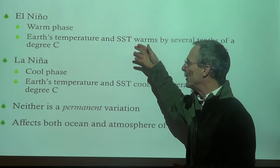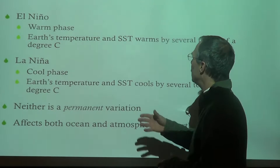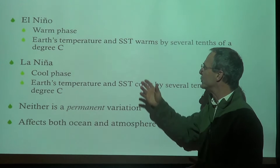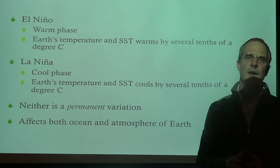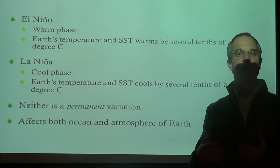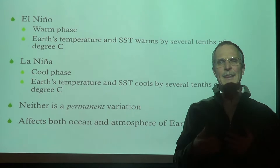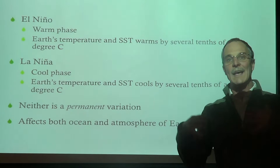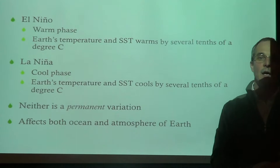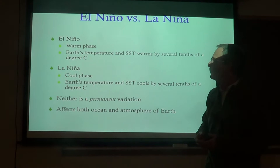We can talk about two phases of this oscillation. The warm phase is typically called El Niño. We'll be looking at graphs in the tropical Pacific Ocean. During El Niño, the sea surface temperature warms by several tenths of a degree above its normal value. La Niña is the opposite phase — the cool phase — so sea surface temperatures in this part of the ocean cool. We really can't say that either phase is abnormal, because it's truly a cycle. They affect both the ocean and the atmosphere.